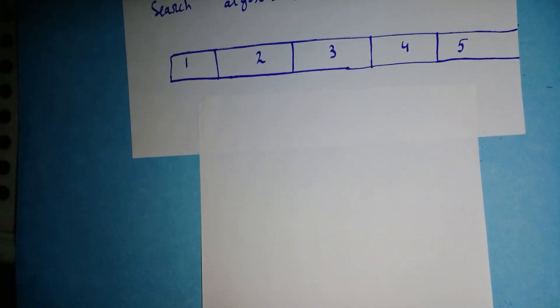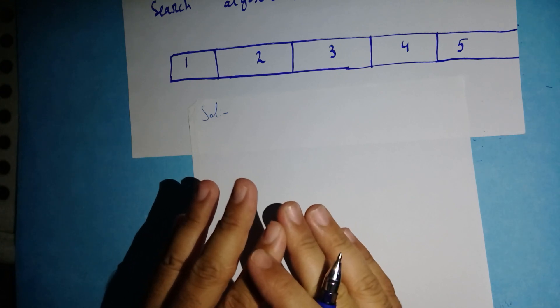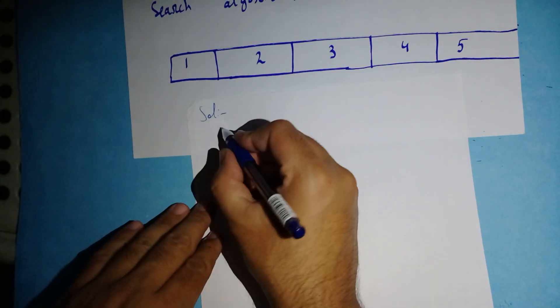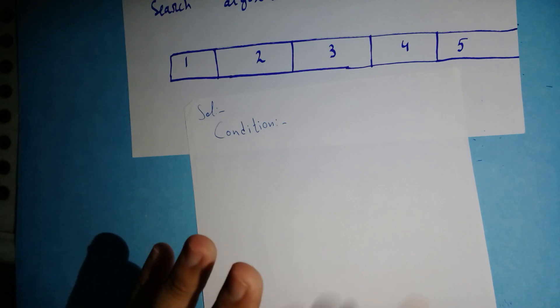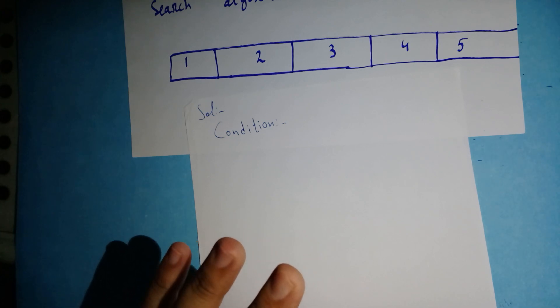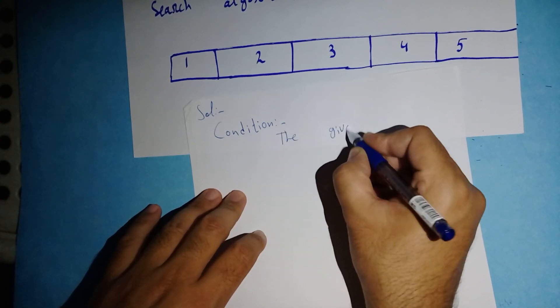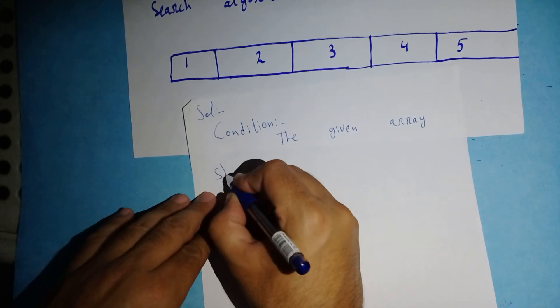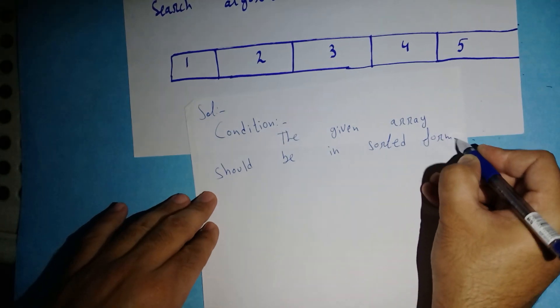I'm going to write the heading of the solution. When you are going to apply or implement interpolation search on the given array, there is one condition: the given array should be in sorted form. If the given array is in sorted form, you can apply interpolation search. If the given array is not sorted, you cannot apply interpolation search on it.